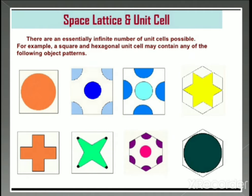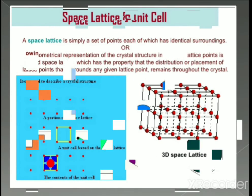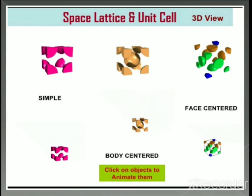There are essentially an infinite number of unit cells possible. For example, a square or hexagonal unit cell may contain various objects in the pattern. In the three-dimensional view, we have the simple cubic, the body-centered cubic, and the face-centered cubic structures.